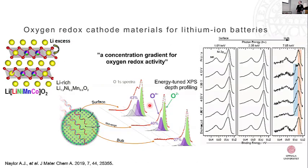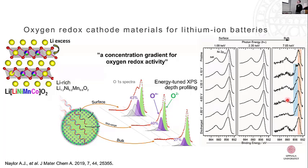I'll give a couple of examples of what we've been doing more generally over the last few years with HAXPES, mostly with data from I09 at Diamond. Firstly, we've been looking at oxygen redox active cathode materials — where oxygen is a redox active element inside the cathode material, giving a boost in capacity. We found a concentration gradient for oxygen redox activity — it's happening more at the surface than in the bulk. Looking at nickel 2p spectra at different photon energies, we also see some interesting activity for the nickel, which is redox active and gets oxidized when you charge the battery.